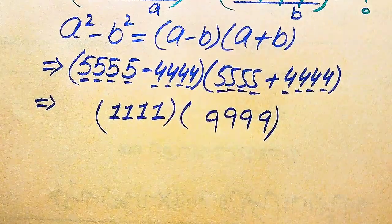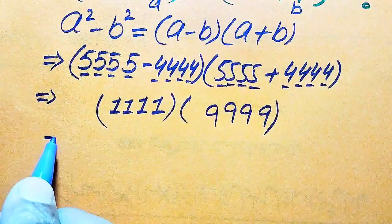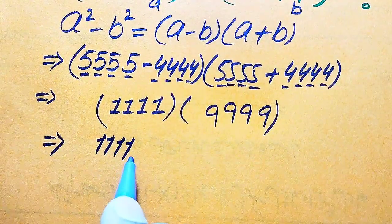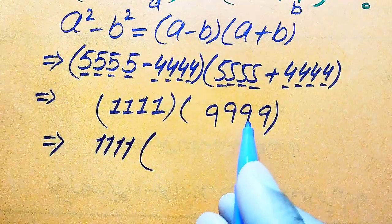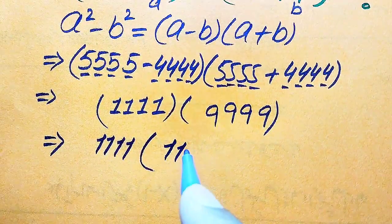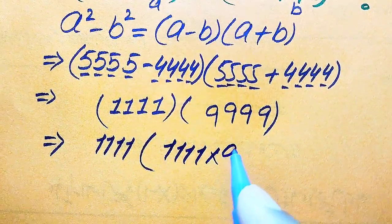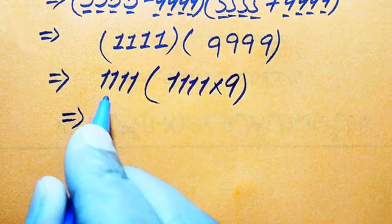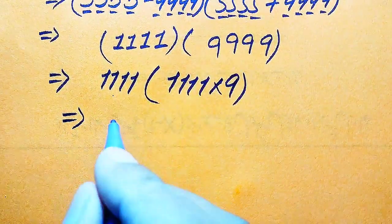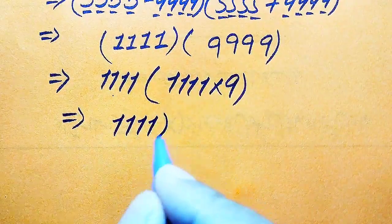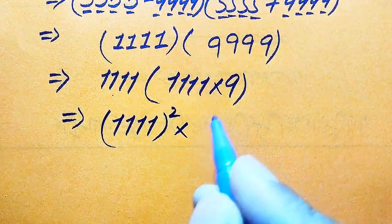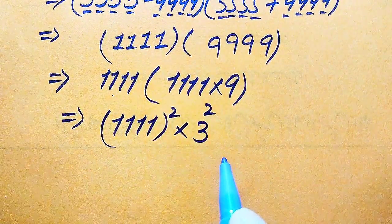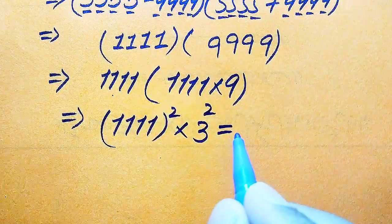So we need to break this value. When we break 9999, it can be written as 1111 multiplied by 9. And when we multiply, we can write 9 as 3 squared, so this becomes 1111 multiplied by 3 squared.